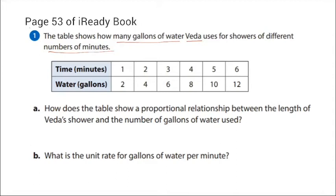Okay, we're on page 53 of your iReady book. At the top it says the table shows how many gallons Veda uses for showers of different number of minutes. It's a data table where the top row is time and the bottom row is gallons. So what we're doing starting today is we're seeing other ways that we can represent proportional relationships.